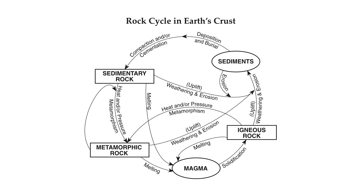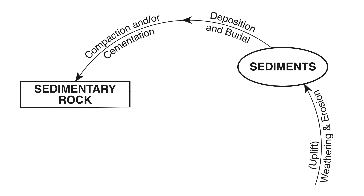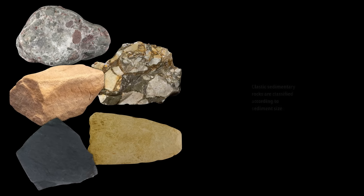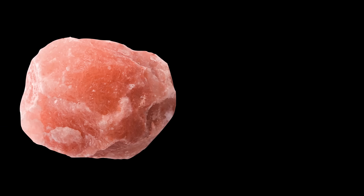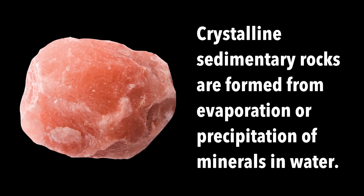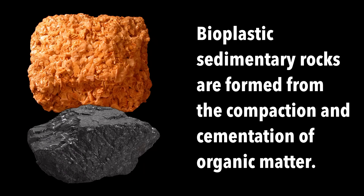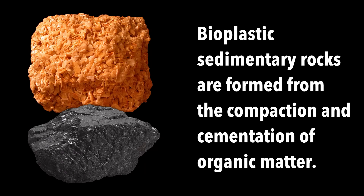Those are our sedimentary rocks. Looking at the rock cycle, it sums this up nicely. Existing rocks need to be weathered or broken down to give us sediments. Those sediments can be eroded, moved, deposited, and then buried by other sediments, with that weight providing enough pressure, compaction, and cementation for the formation of a sedimentary rock. To review: clastic sedimentary rocks are classified according to the size of the sediments that make them up. Crystalline sedimentary rocks like rock salt are formed from evaporation or precipitation of minerals in water. Bioclastic sedimentary rocks like limestone and coal are formed from the compaction and cementation of organic matter.